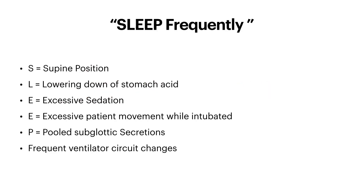Here is the mnemonic of major risk factors for ventilator-associated pneumonia: SLEEP. S means supine position. L means lowering of stomach acid by proton pump inhibitors, H2 receptor blockers, and antacids. E means excessive sedation and paralysis. Another E means excessive patient movement while intubated. And P means pooled subglottic secretions and frequent ventilator circuit changes.